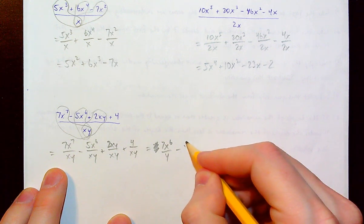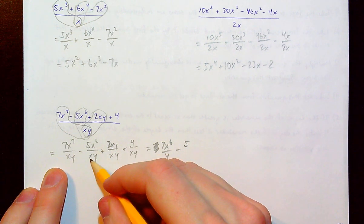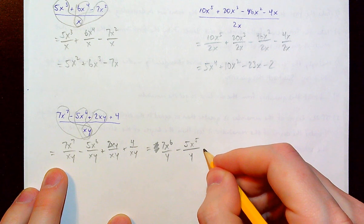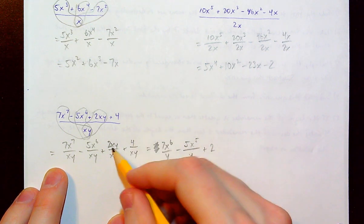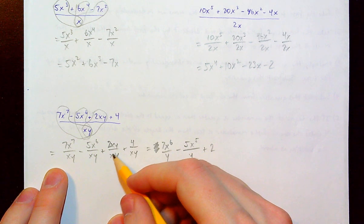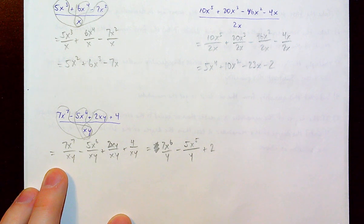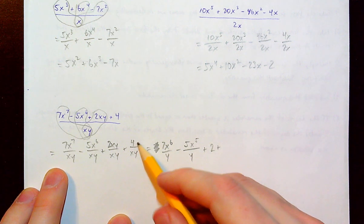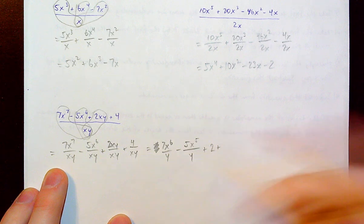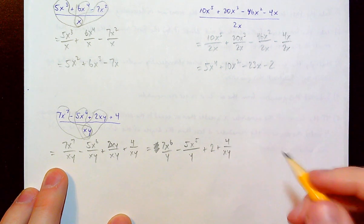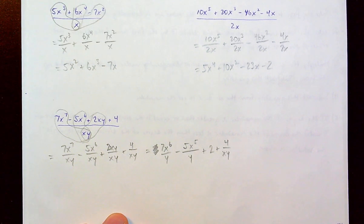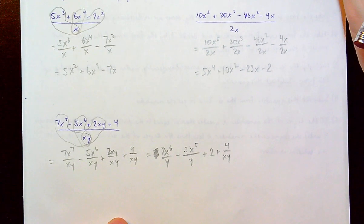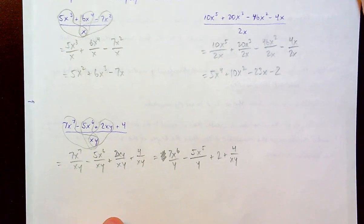Minus 5/1 is 5, x⁶ divided by x is x⁵, with y on the bottom: 5x⁵/y. Plus 2/1 is 2, x divided by x is 1, y divided by y is 1, so just 2. The last term, 4 on top with no x's or y's, we leave as 4/xy. So those are some nice examples of easy division of polynomials.